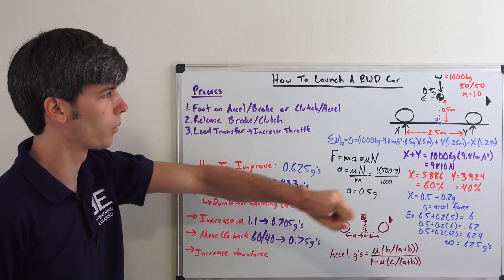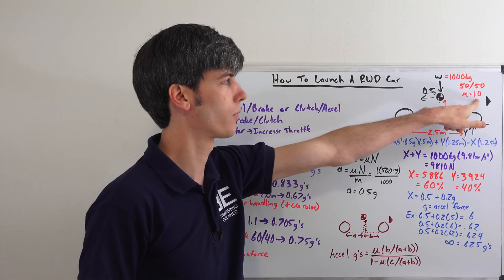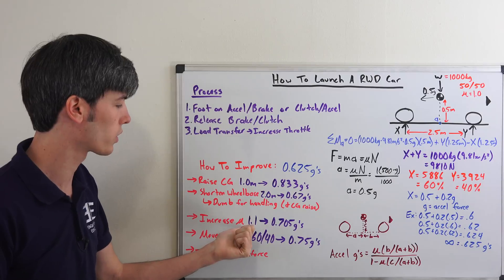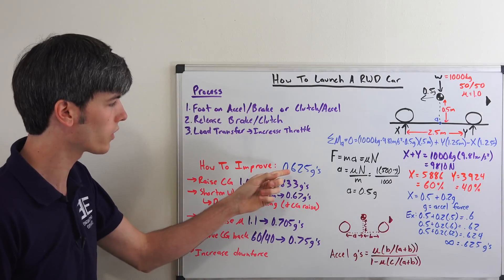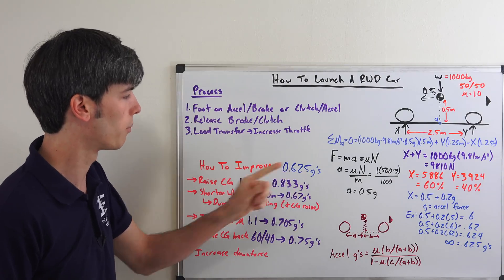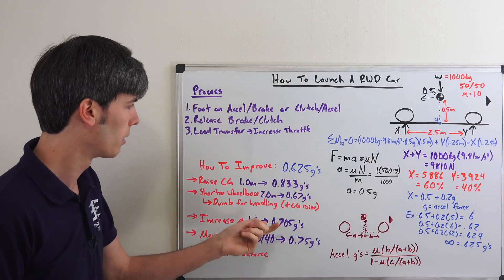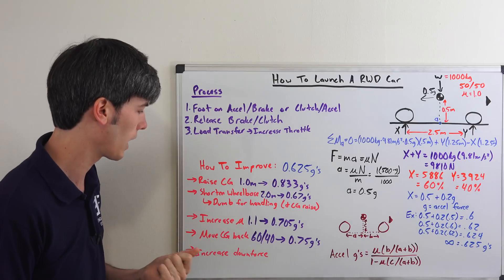So let's say you change out your tires. Originally we had tires with a coefficient of friction of 1.0, but we found some stickier tires and they had a coefficient of friction of 1.1. Well, that's going to raise our maximum acceleration from 0.625 to 0.705. So a significant improvement there, 0.08 g's, just by changing out the tires.